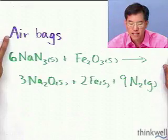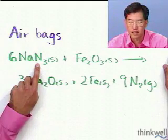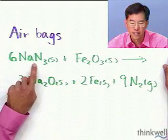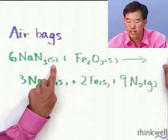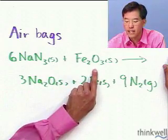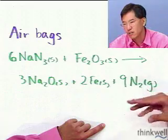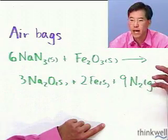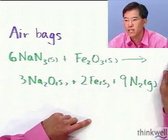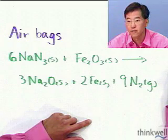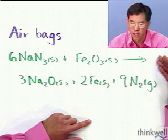A really dramatic example of that fact is in airbags, which are a secondary safety device in cars. Inside an airbag is an amount of sodium azide, NaN₃, which is a solid, and ferric oxide, Fe₂O₃, which is also a solid. So really, there's no gas at all in the airbag when it's sitting in your dashboard — the number of moles of gas is zero, and so the volume is essentially zero.